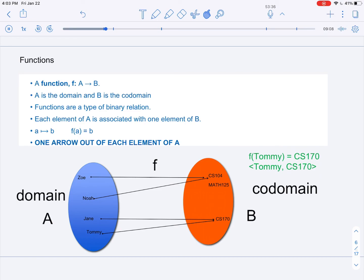That is what makes functions special. And it can only be one such ordered pair for each.